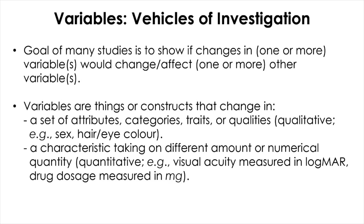On the other hand, if a variable changes in a characteristic taking on different amounts or numerical quantities, then we call this kind of variable a quantitative variable. Visual acuity measured in LogMAR can be an example of a quantitative variable because we assign numerical quantities to represent visual acuity in LogMAR units.